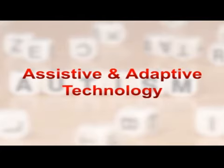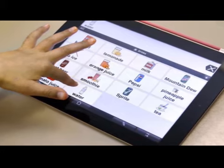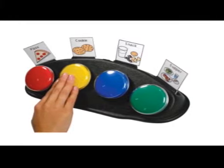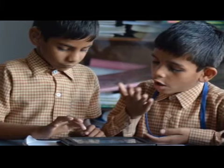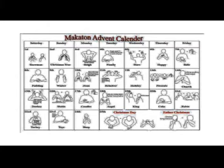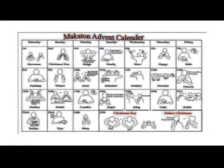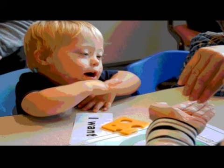Assistive and adaptive technology refers to any products, devices, or equipment used to maintain, increase, or improve the functional capabilities of individuals with autism. Makaton enables a child to communicate who has no other form of communication. It is a basic signing system with each sign having a matching line-drawn pictorial support. It is mainly used with young autistic children.